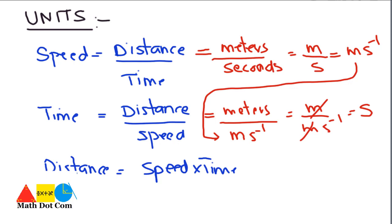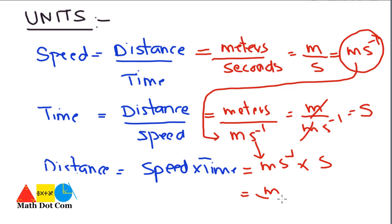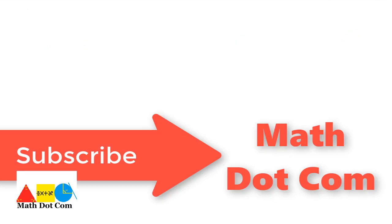For distance, speed is in meter per second and it is multiplied with time, whose unit is second. So you write meter per second into second — the seconds cancel out and the unit of distance will be meter. These are the units that you have to keep in mind when you solve word problems related to these quantities. Thank you for watching. If you like this video, please subscribe to mat.com.